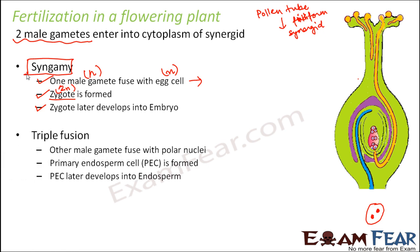The second male gamete will fuse with the polar nuclei. The polar nuclei are located in the middle of the embryo sac — there are two of them, each haploid. The male gamete is also haploid, so in total three haploid nuclei are fusing together. As a result, the primary endosperm cell, or PEC, is formed. Since three haploid nuclei fuse, the PEC will not be diploid but triploid.